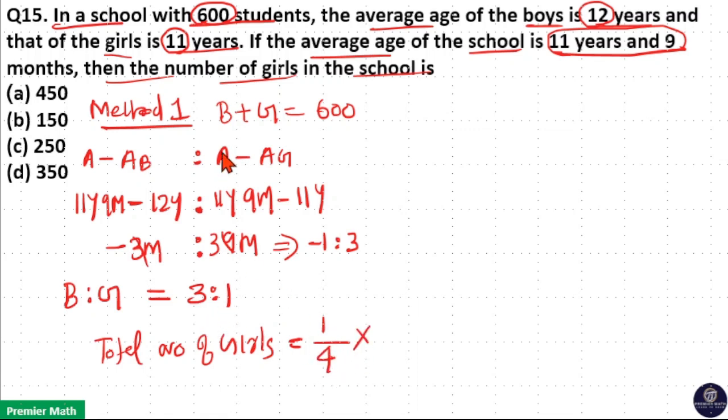And total number of boys and girls is 600. So, 1 by 4 of 600 is number of girls which is equal to 150. So, option B is your answer.